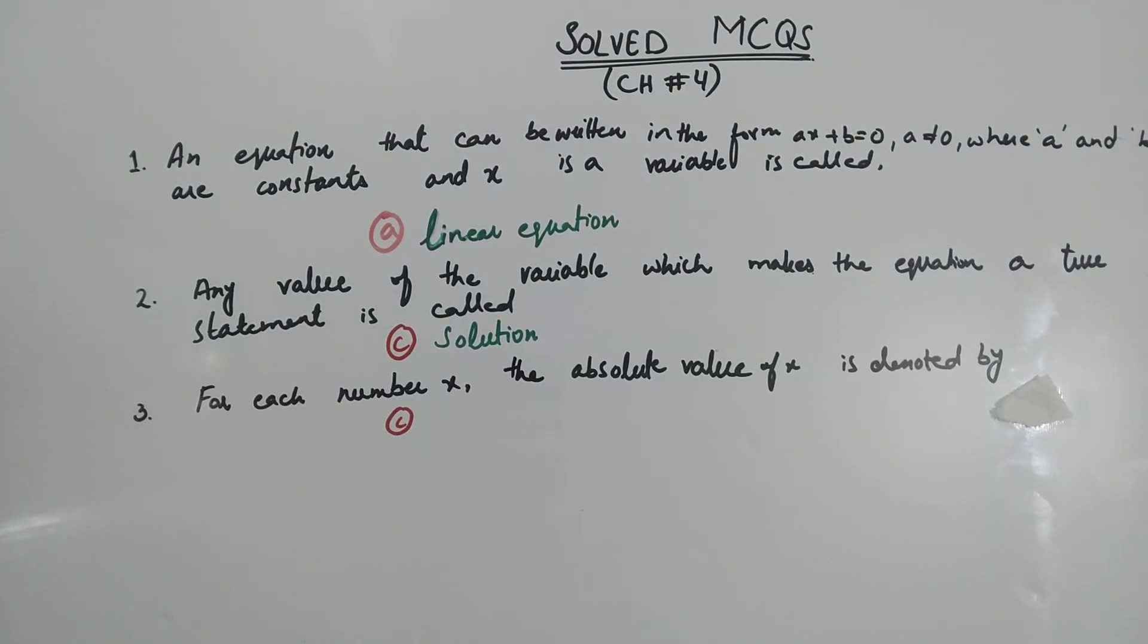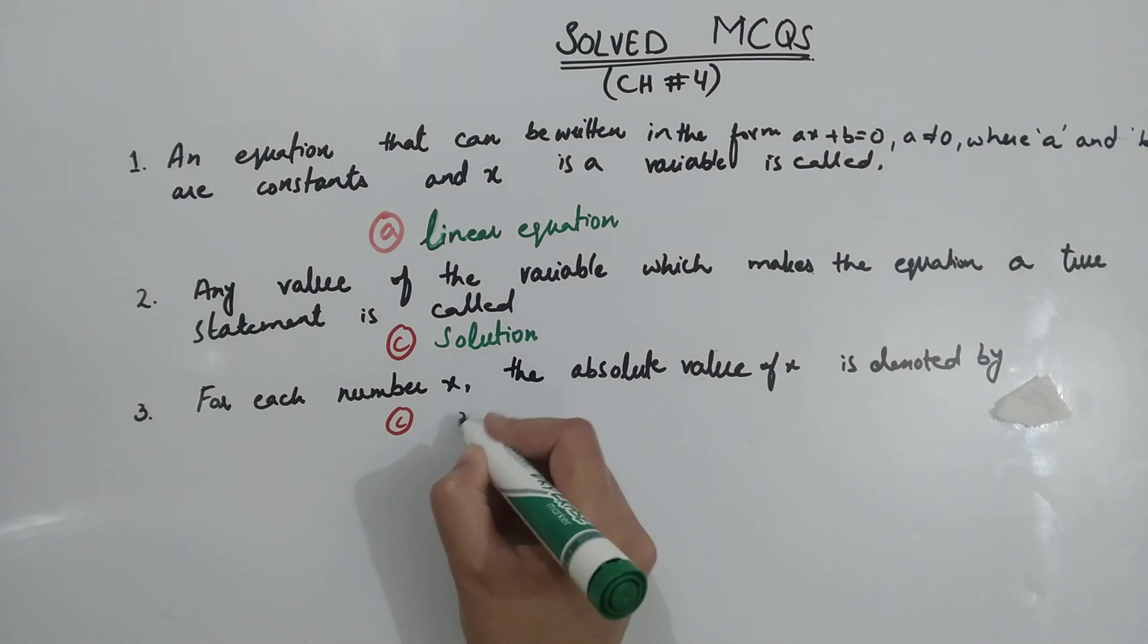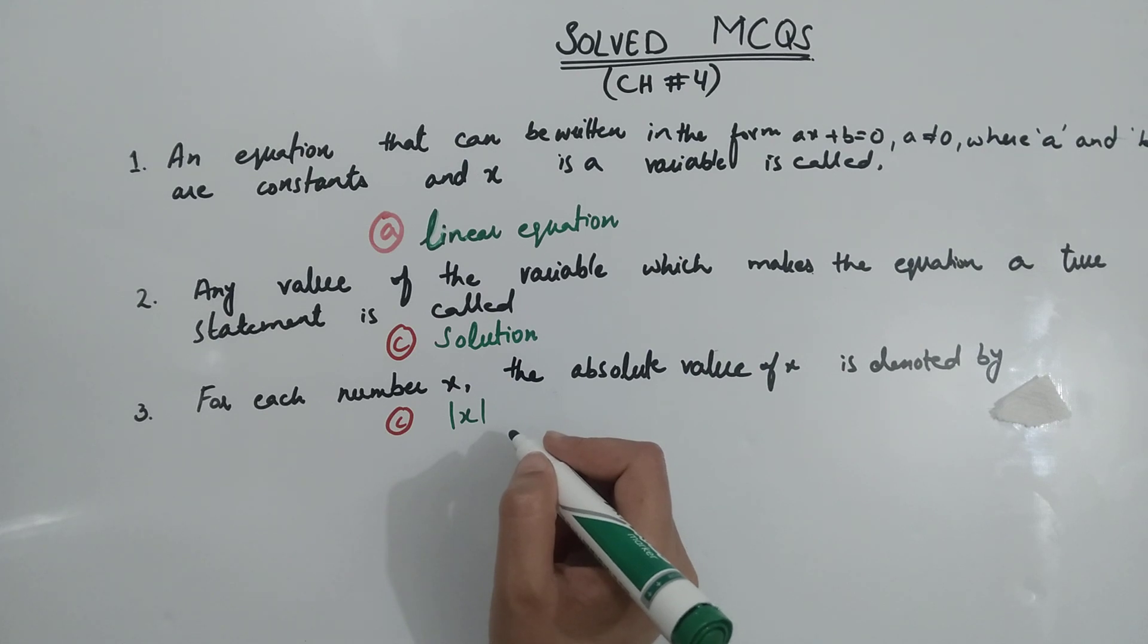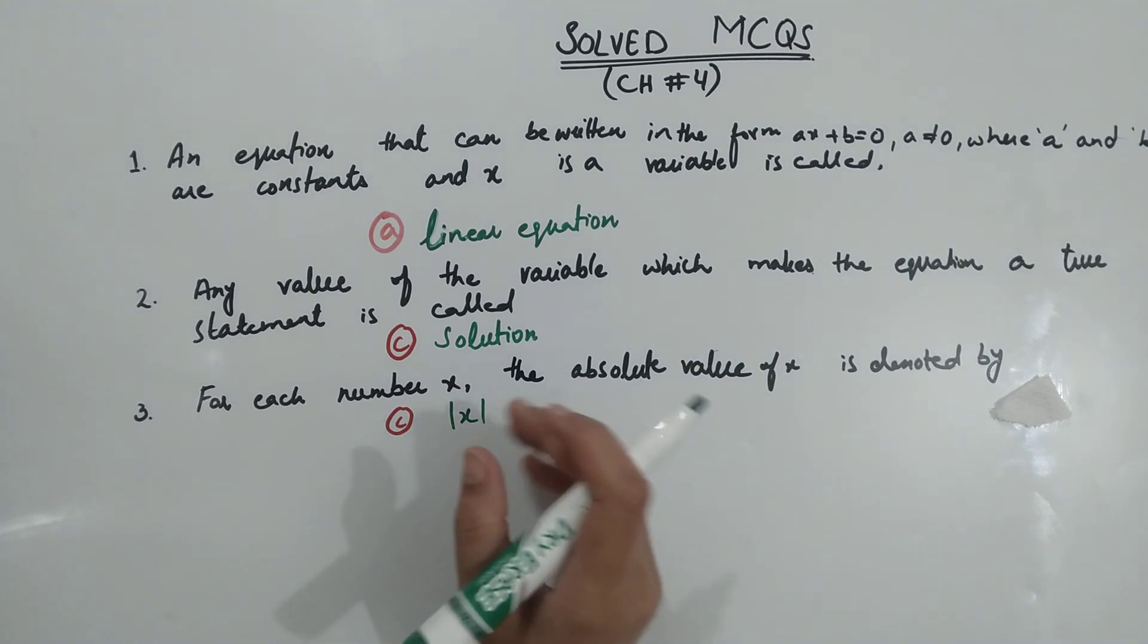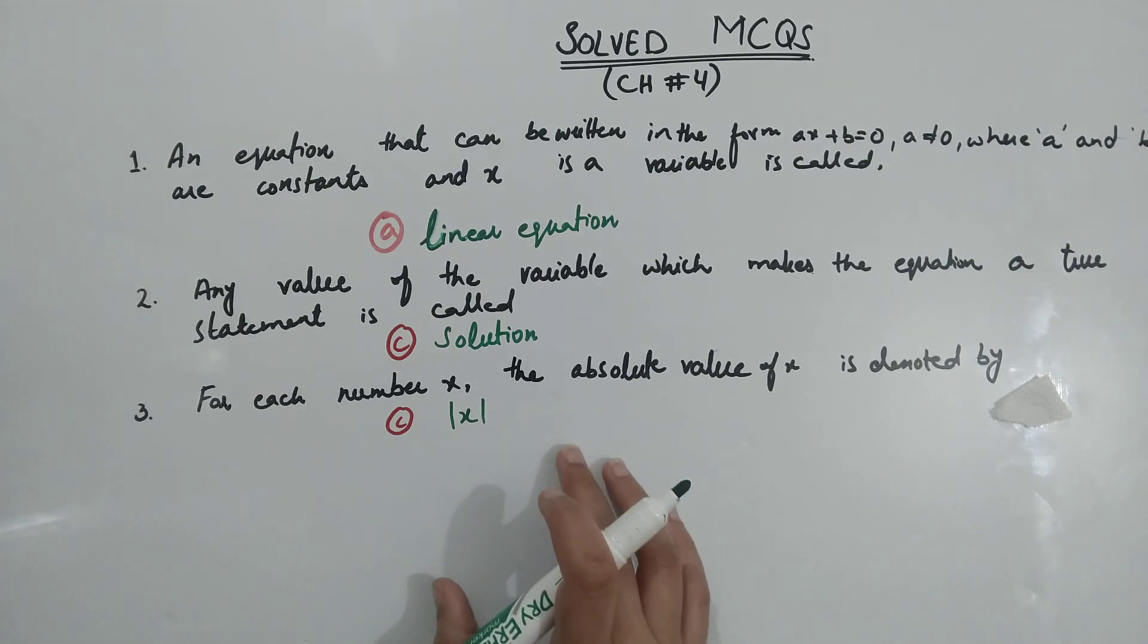For each number x, the absolute value of x is denoted by option c, x mod. Isko modulus value bhi kehte hain or absolute value bhi kehte hain. Iski definition bhi important hai jo ke maine apni shorts videos mein, usme maine past papers banayi hui hain chapter number 4 ke bhi. Waha se bhi aap dekh sakte hain.